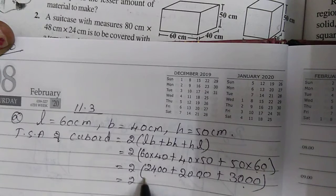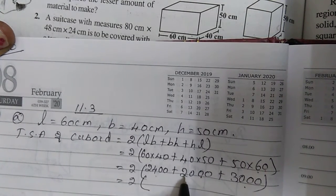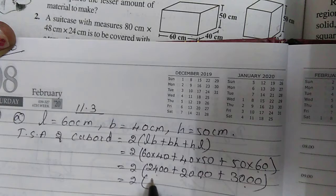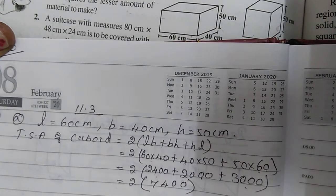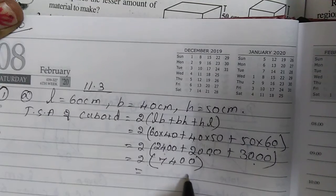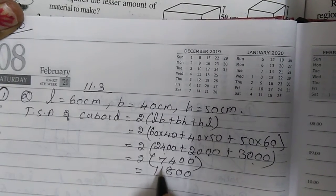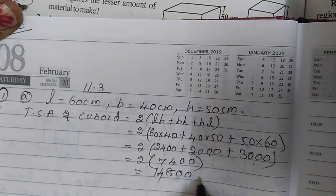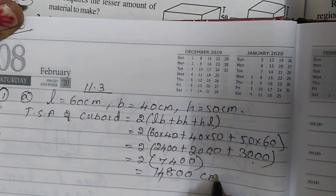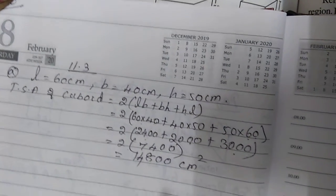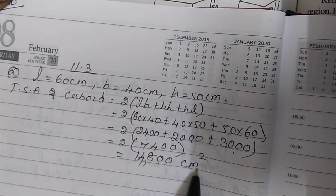Summing up: 2400 + 2000 + 3000 = 7400. Multiplying by 2 gives 14,800 cm². So the total surface area of the first cuboid is 14,800 cm².